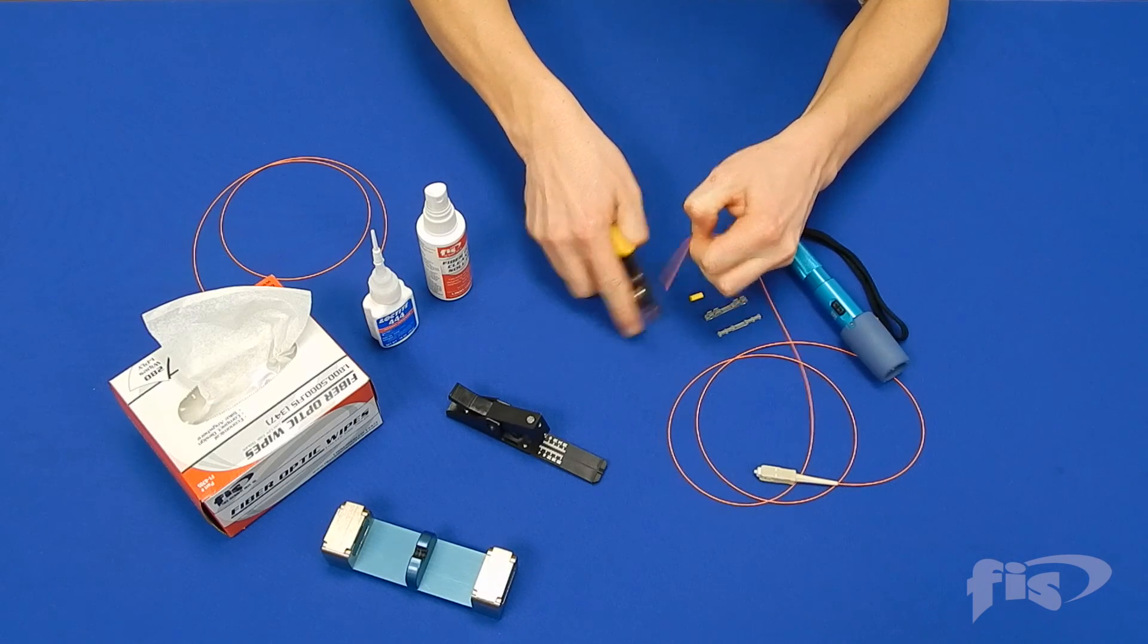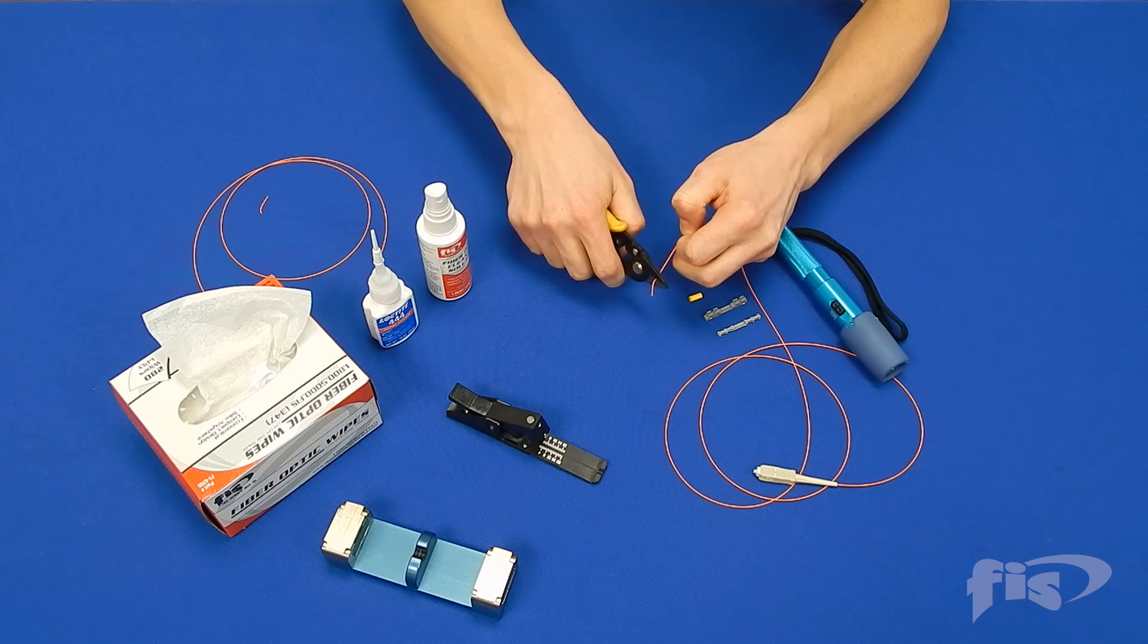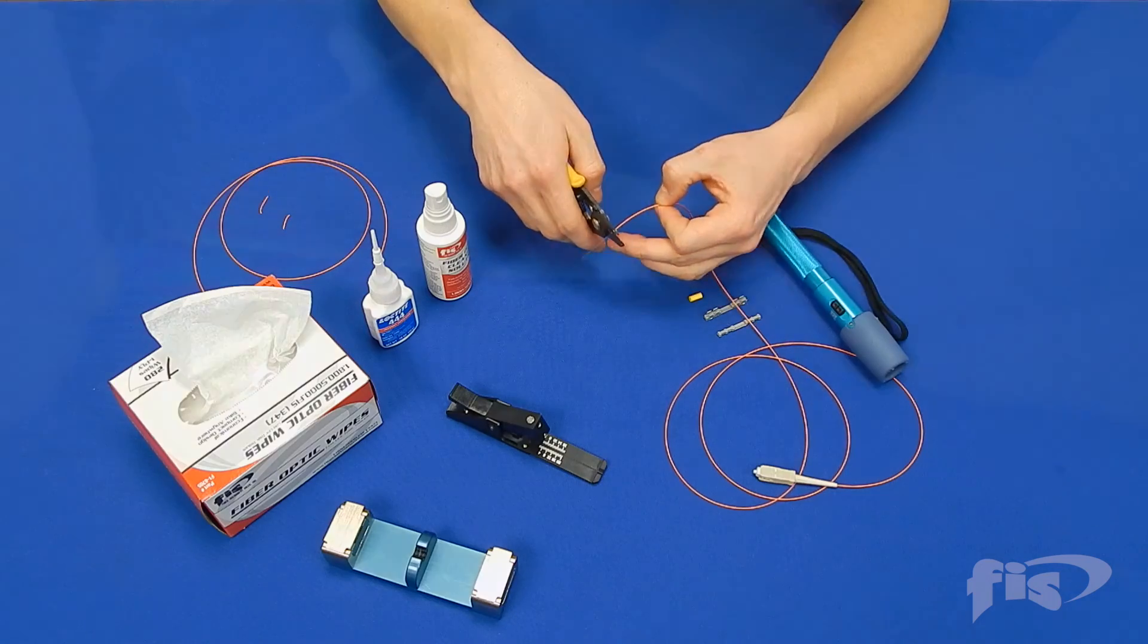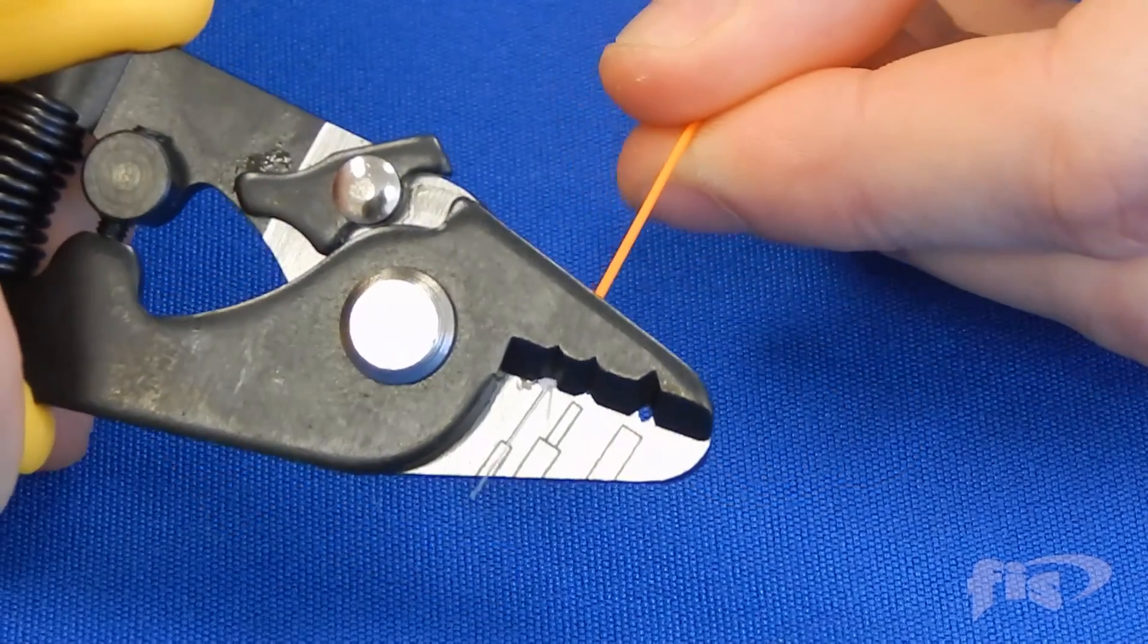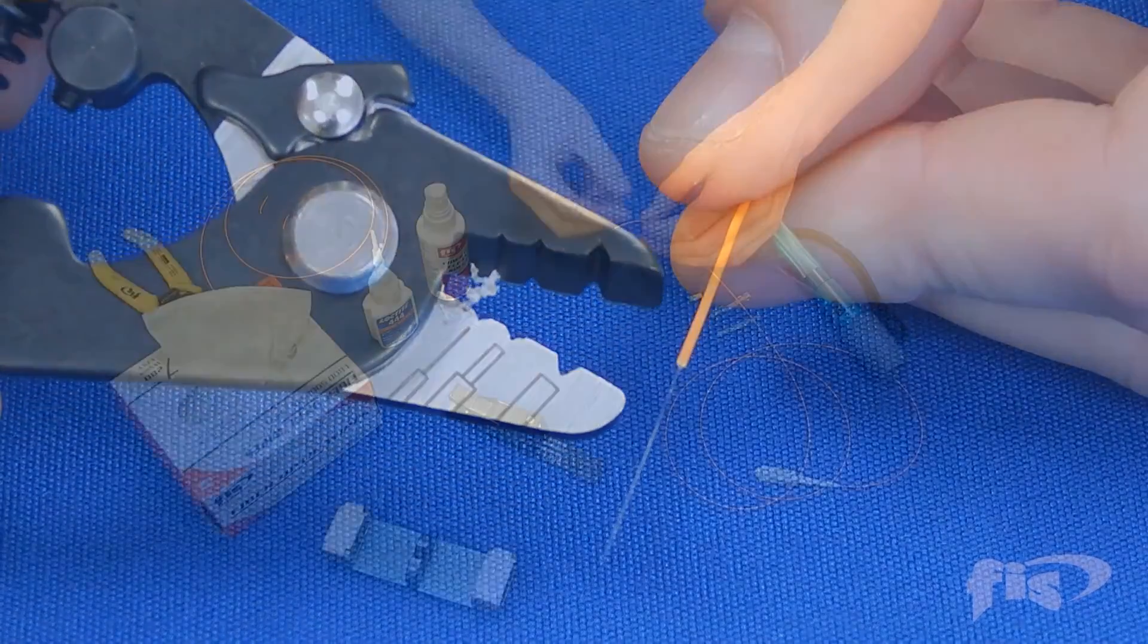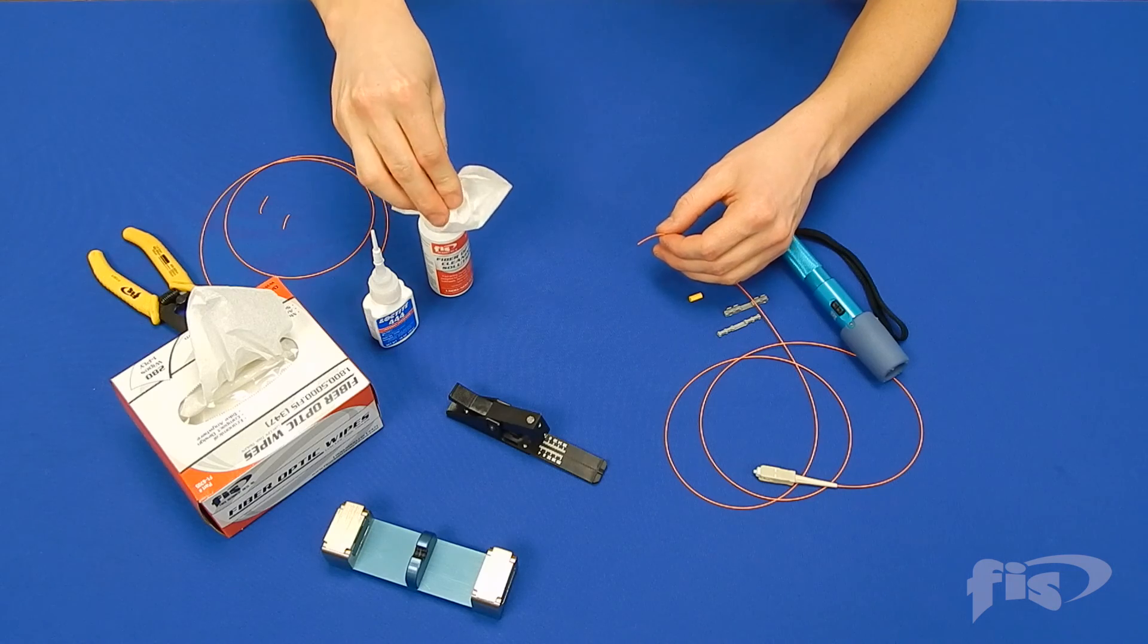Begin by stripping an inch and a half of 900 micron jacket from the first fiber. Be sure to remove all of the acrylite coating. Wipe the fiber clean with cleaning solution before cleaving.